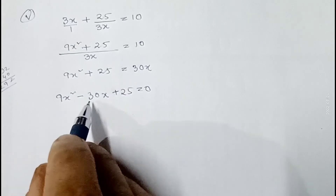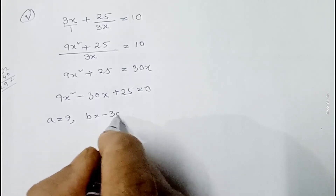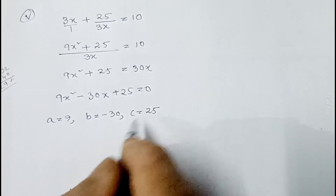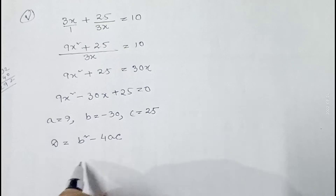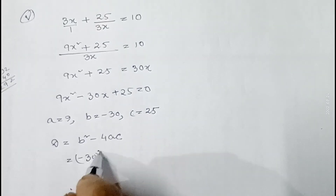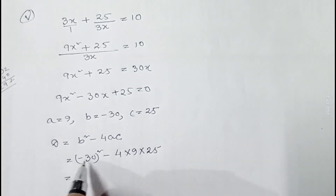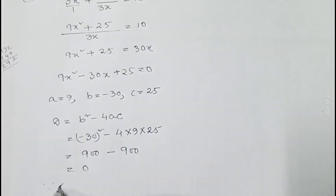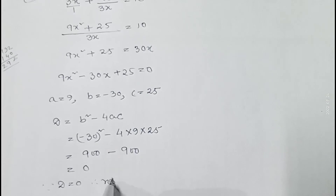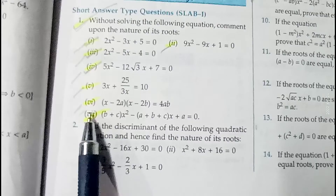Now calculating discriminant: D = b² - 4ac = (-30)² - 4×9×25 = 900 - 900 = 0. Since D = 0, therefore roots are real and equal.